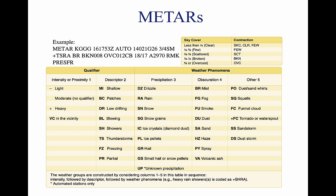8. Sky Condition — BKN008 OVC012CB — always reported in sequence of amount, height, and type, or indefinite ceiling height. The heights of the cloud bases are reported with a three-digit number in hundreds of feet AGL. The types of clouds, specifically towering cumulus (TCU) or cumulonimbus (CB) clouds, are reported with their height. Contractions are used to describe the amount of cloud coverage and obscuring phenomena. The amount of sky coverage is reported in eighths of the sky from horizon to horizon.